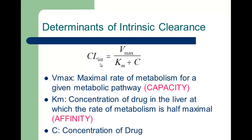The determinants of enzyme activity are: Vmax — the capacity of the system, meaning the maximal rate of metabolism for a given pathway — and Km, the dissociation constant, which gives a read on affinity. Km is the concentration of drug in the liver at which the rate of metabolism is half-maximal. The lower the Km, the higher the affinity; the higher the Km, the lower the affinity. Concentration can also be a determinant, but usually therapeutic concentrations are much lower than Km, so it falls out. Only Vmax and Km determine enzyme activity unless concentration is close to Km, which gives non-linearity in the therapeutic range.